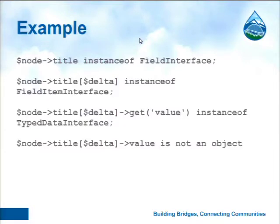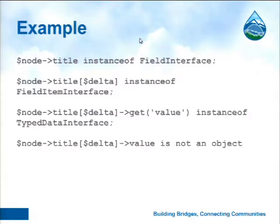Below a field item, there are so-called primitives — basically strings, numbers, boolean values, and so on. They can also be computed. There are two ways to access them: you can call get() and get_value() which returns an object implementing the typed data interface, and then call getValue() to get the actual value; or you can rely on magic methods and just access it as a property on that class, which will call getValue() internally. Accessing the title and delta also goes through magic methods and array access.